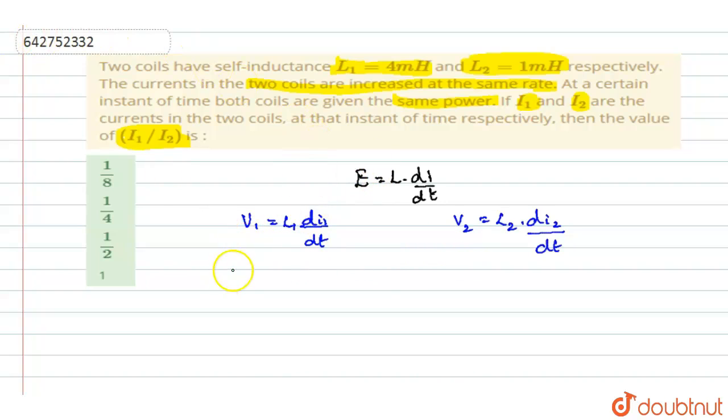They are saying that the power is same. At a certain instant of time, the coils have the same power. What is the equation of power? We know P equals V into I. So V1 I1 equals V2 I2. In place of V1 and V2, we will substitute to get I1 into L1 into di1 by dt equals I2 into L2 into di2 by dt.